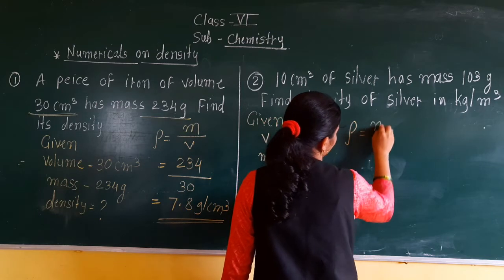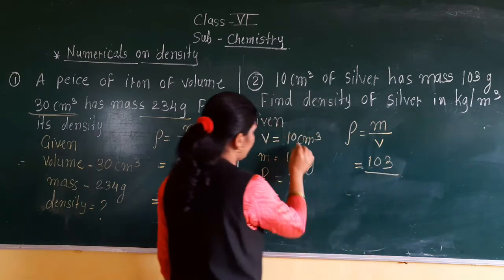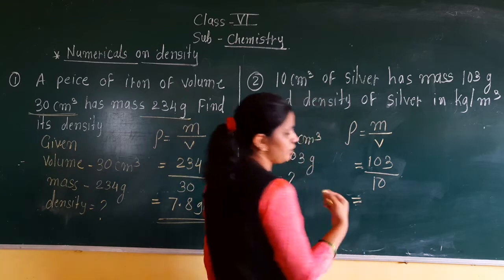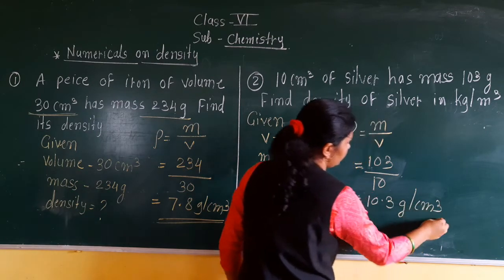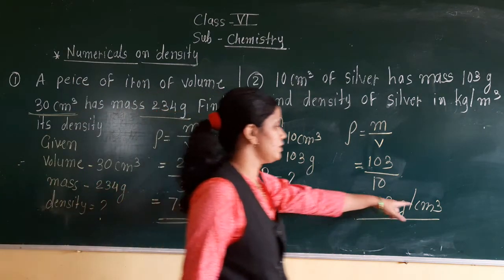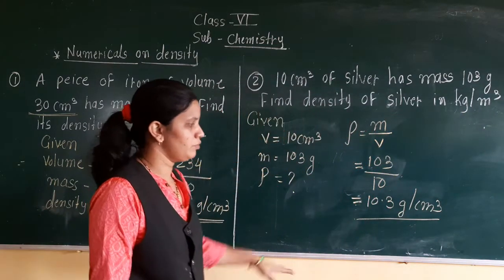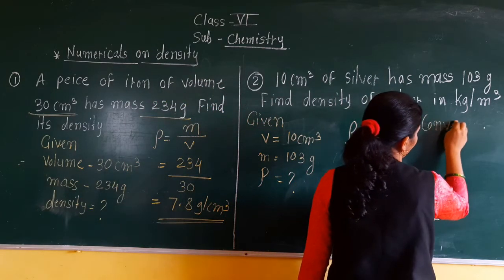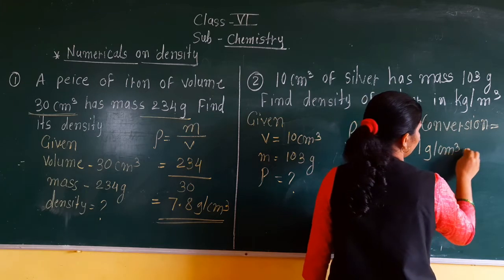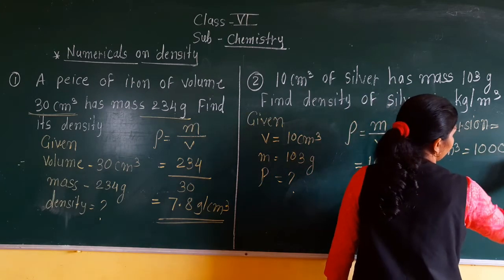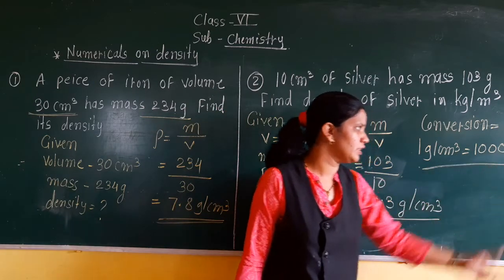Density is equal to mass upon volume. So mass 103 divided by volume 10 gives 10.3 gram per cm cube. Now this density is in gram per cm cube, but in this question they want the density in kg per meter cube. Now we have to convert it. The conversion is: 1 gram per cm cube is equal to 1000 kg per meter cube.